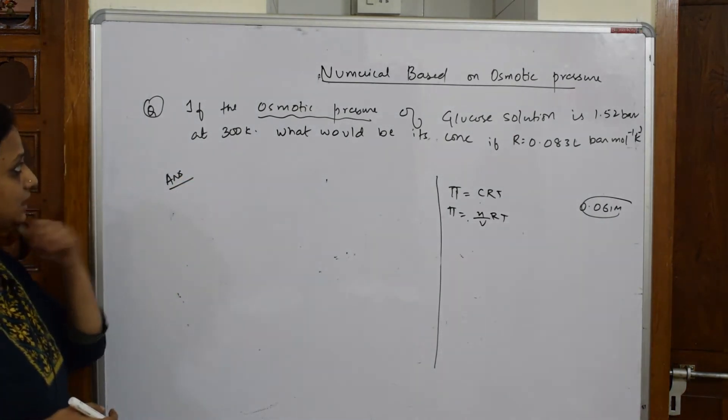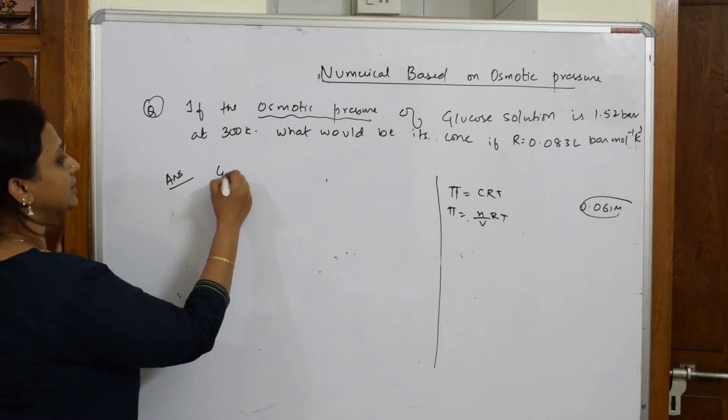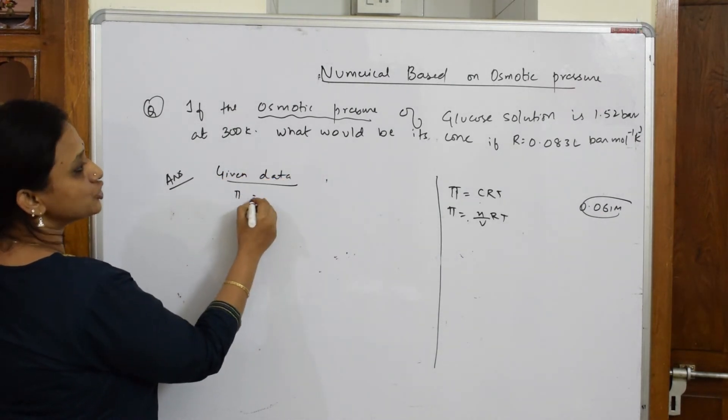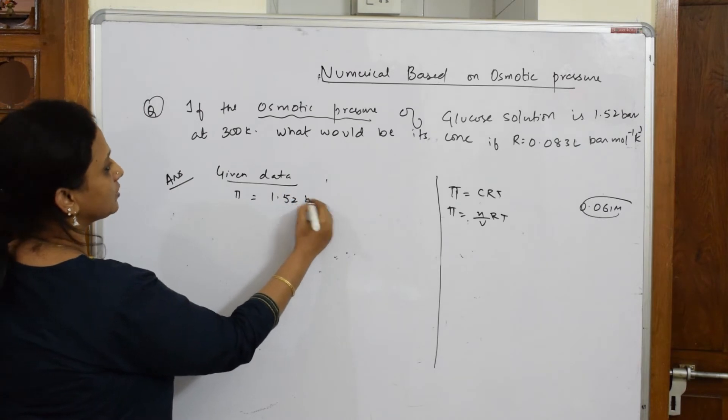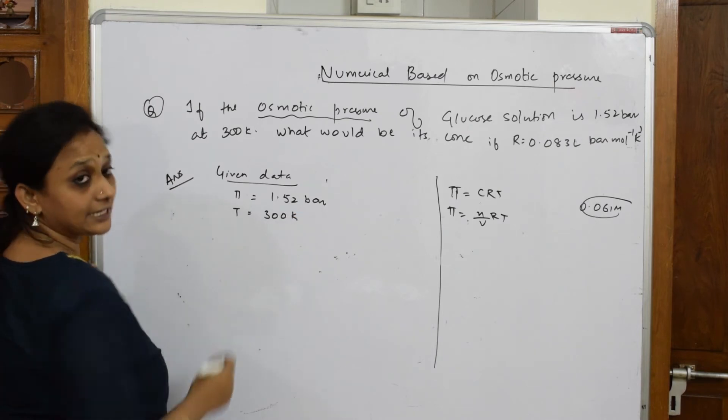Come back and see - the osmotic pressure of glucose solution. Given data: π is given to me 1.52 bar, and temperature is also given to me 300 Kelvin, done directly.